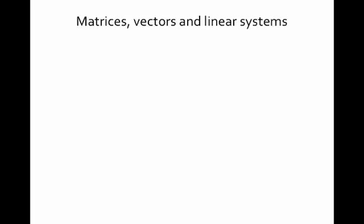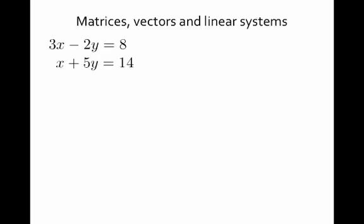The reason this is important is because we can recast the whole notion of linear systems in a different, simpler format using matrices and vectors. Let's go back to a linear system we saw earlier — two linear equations, a system with two equations and two unknowns. This is all well and good; we have two equations from regular old algebra.